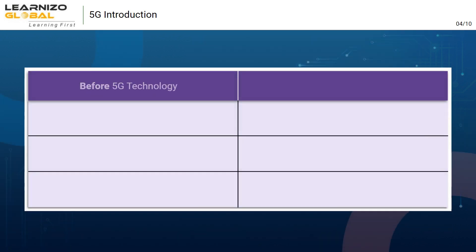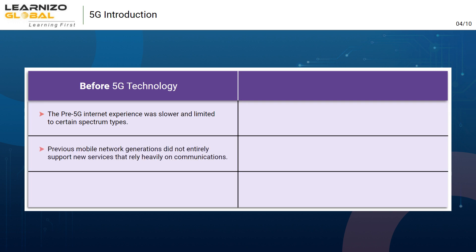Before 5G technology, the pre-5G internet experience was slower and limited to certain spectrum types. Previous mobile network generations did not entirely support new services that rely heavily on communications, and there were significantly more issues and limitations to availability and reliability.